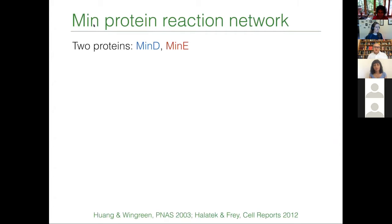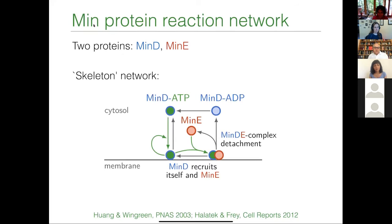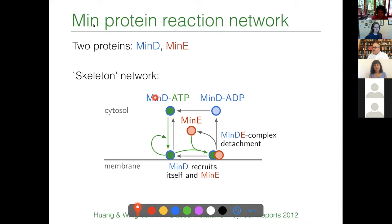To give you a feel of the underlying reaction network, let me explain it for the MIN system. I have just two proteins, MIN-D and MIN-E, but they have very different roles in the network. At the heart of the network, you have a pair of inactive and active MIN-D protein. Only if the MIN-D protein is in its active ATP-bound state can it bind to the membrane. Once bound, it has the ability to recruit more MIN-D to the membrane — a positive feedback: the more MIN-D on the membrane, the more will be shuttled there.